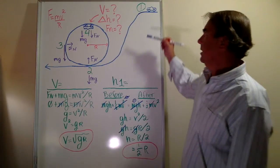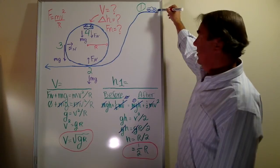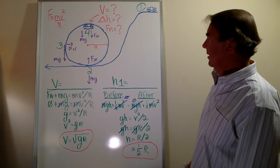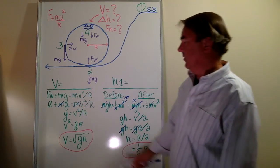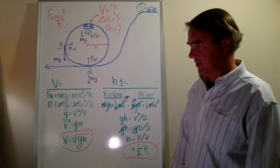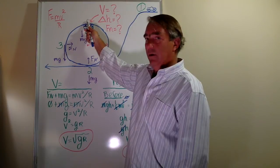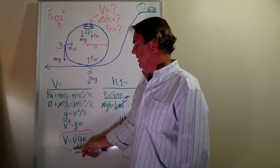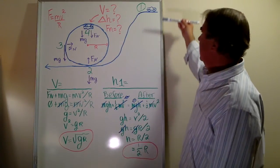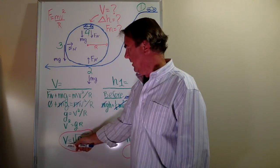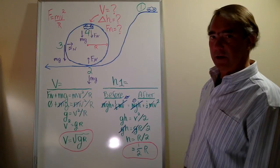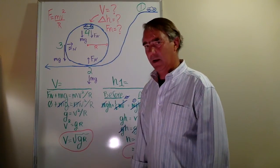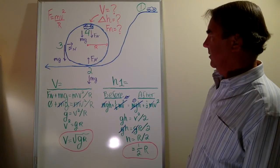The result is that the initial height above the top of the track that the car needs to start at is equal to one half the radius of the circle. The keys to solving this problem are to use Newton's second law to answer the velocity question — summing forces in the radial direction at the point of lowest tangential velocity where the normal force goes to zero — and then use conservation of energy to answer the initial elevation question, plugging the computed velocity into that expression.